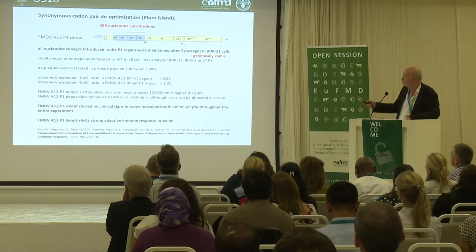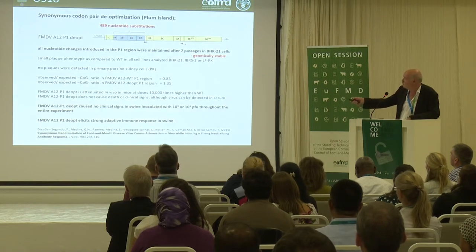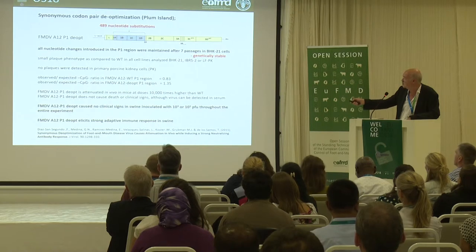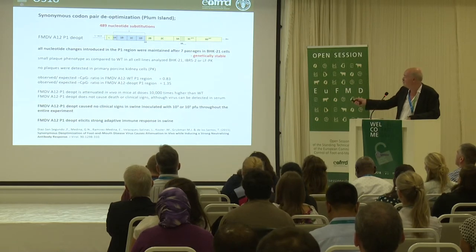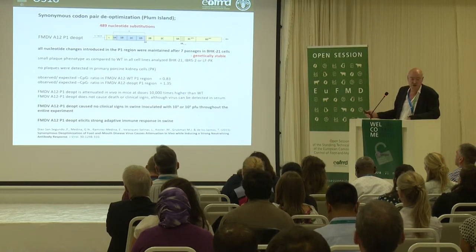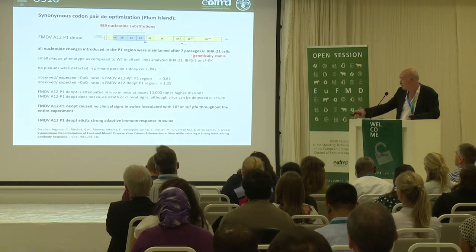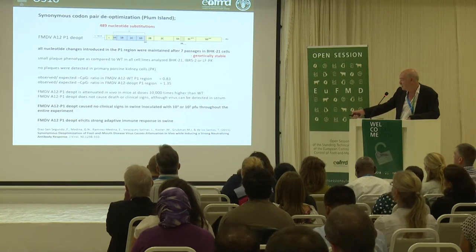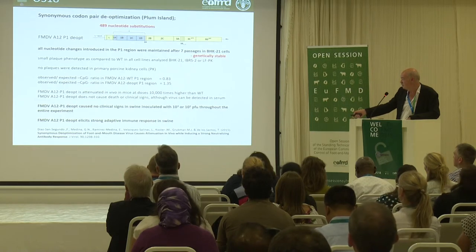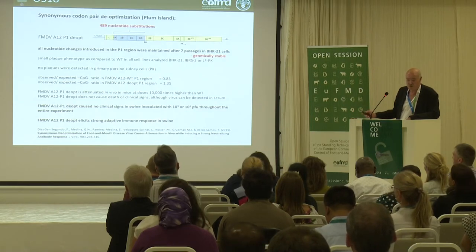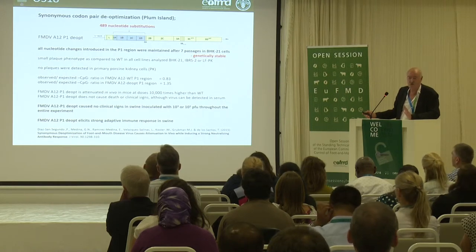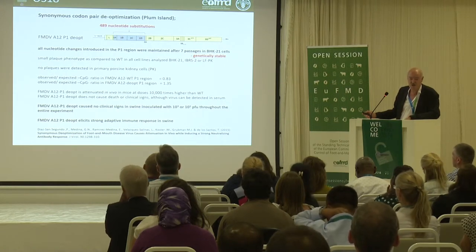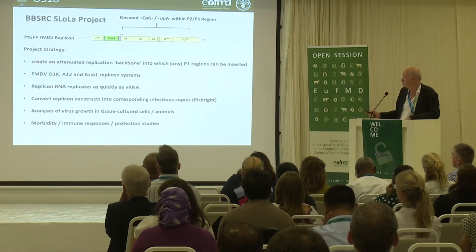Work that Plum published involved making a whole series of 489 silent nucleotide substitutions in the P1 region. They showed that after seven passages, this was still genetically stable. Importantly, this A22 P2 construct elicits a strong adaptive immune response in swine. I think that was a seminal paper pointing the way forward to using this SAVE strategy to make new live attenuated vaccines for foot and mouth.